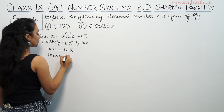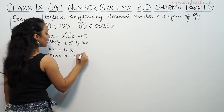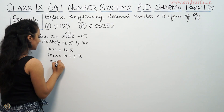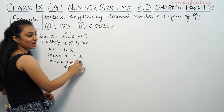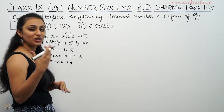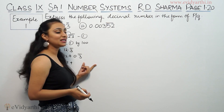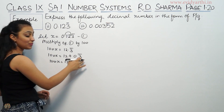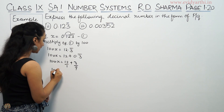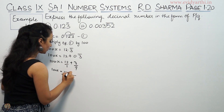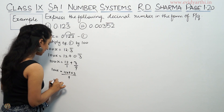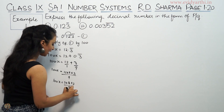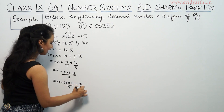So 100x is equal to 12 plus 0.3 bar. Now we have to solve the repeating decimal 0.3 bar, which equals 3 by 9. So 100x equals 12 into 9 plus 3, all over 9, which gives us 108 plus 3 by 9, that means 111 by 9.